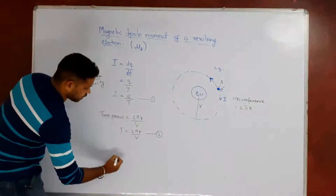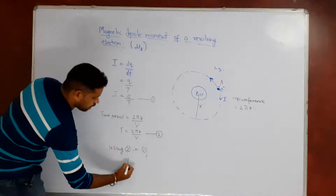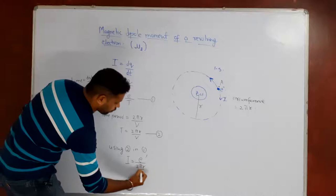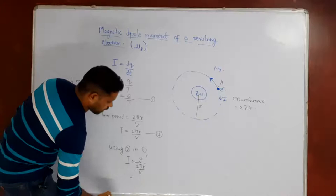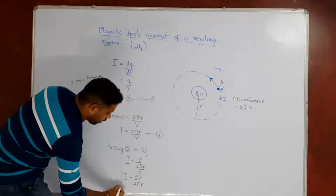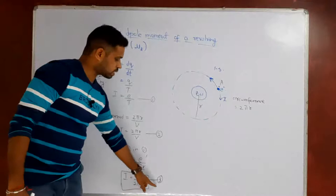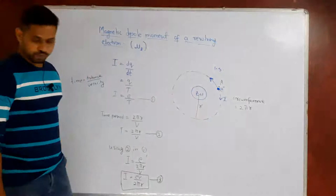Substitute equation number 2 in equation 1. Using 2 in 1, we get I equals E divided by (2πr/v), which gives current I as equal to Ev by 2πr. Ev by 2πr is the current that is flowing due to the revolution of the electron. I equals Ev by 2πr is the amount of current flowing in this orbit.